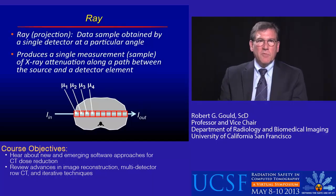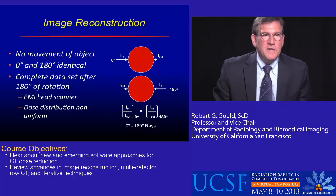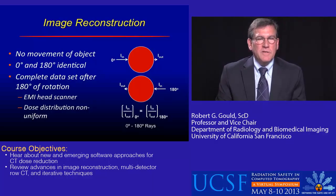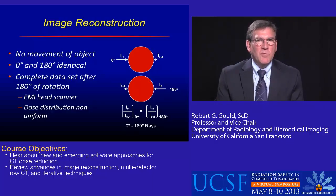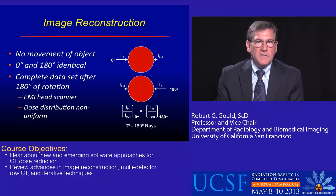Consider a simple reconstruction where there's no movement of the object. We start the source at 0 degrees and it rotates around to 180 degrees. The beam then passes exactly along the path, but in the opposite direction.